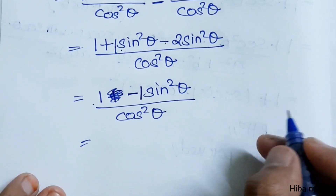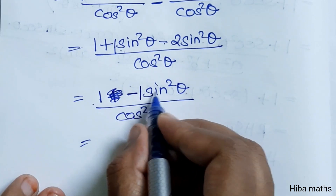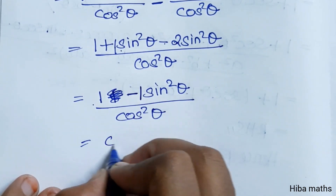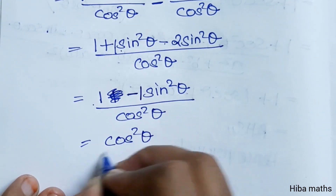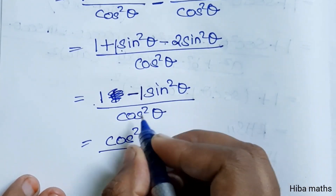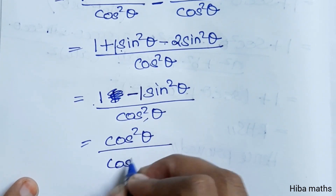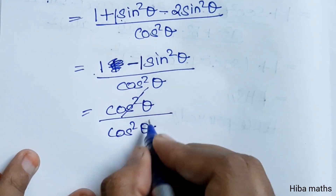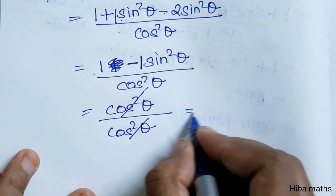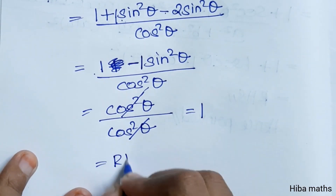Since 1 minus sin²θ equals cos²θ, we substitute and the cos²θ terms cancel, giving us 1. So the answer is 1. Hence proved.